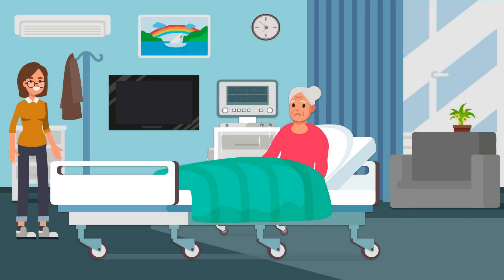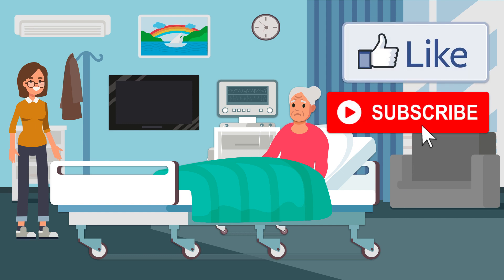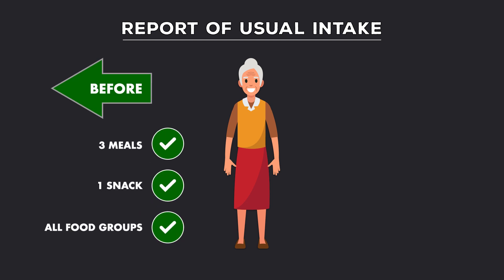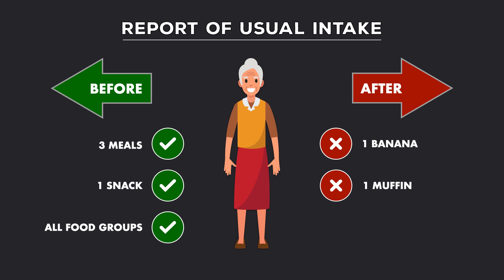Interviewing the patient provided two key data points for the assessment of malnutrition. The first key data point was the patient's report of usual intake. Before she was sick, she would eat three meals and one snack per day with foods from all food groups. But on most days in the past six weeks, she only consumes one banana and a blueberry muffin. With this information alone, we can safely estimate that her energy intake is less than 75% of her estimated energy need for greater than one month.